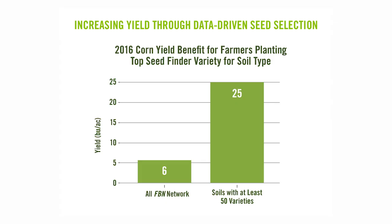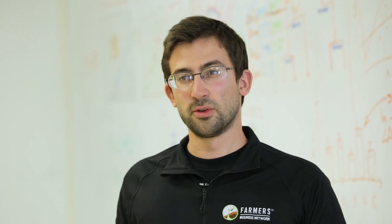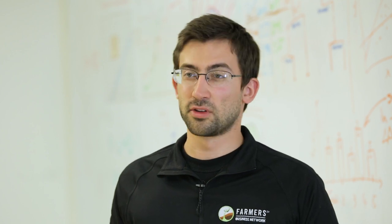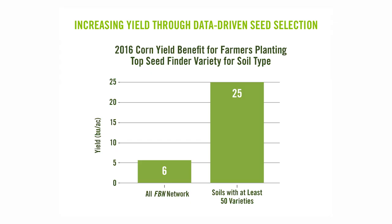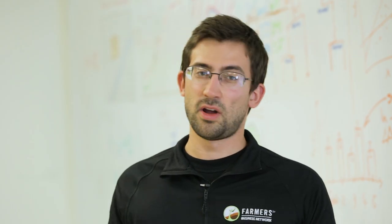A farmer can't plant every variety on their farm, which is why you have to look at the network data to be sure you're getting the best seed. We looked at farmers who in 2016 planted the variety that at the end of 2015 showed up as the top variety in FBN for their soil, and compared their performance to farmers who planted a different variety. We observed on average a yield difference of more than six bushels an acre, and on soil types where we have even more data, sometimes more than 20 bushels an acre more.